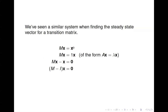That looked like this: we had Mx equals x, so we wanted to know if there was a vector x such that you apply the transition matrix to it and you get the same vector back. If you look at x here as having a coefficient of 1, so we have Mx equals 1 times x, then it's of the same form as our eigenvector and eigenvalue equation, Ax equals lambda x. We've seen systems like this before, and we're going to solve them in a similar way as we did when we found the steady state vector.